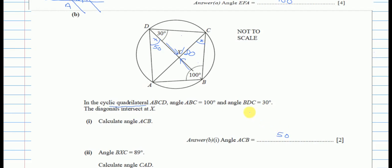The second method: angle BDC (30 degrees) and angle BAC (in the same segment) are both subtended by arc BC, so angle BAC is also 30 — these are called angles in the same segment. In triangle ABC, the angles are 30, 100, and the remaining angle ACB is 180 minus 30 minus 100, which equals 50. This confirms angle ACB is 50 degrees.